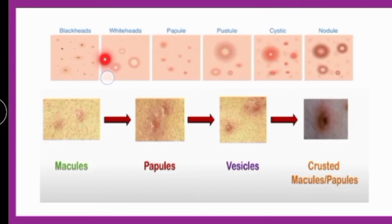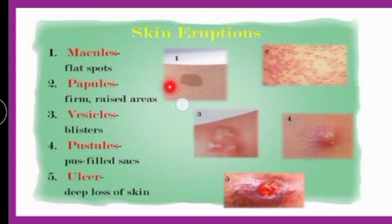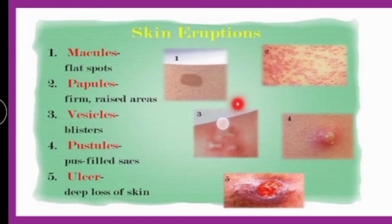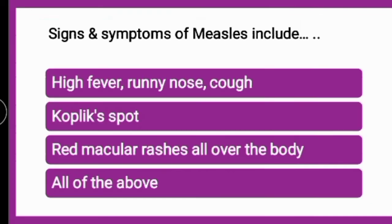Looking at the image showing types of lesions: macules are flat surface structures, papules are slightly raised areas, vesicles are fluid-filled, and pustules are pus-filled. So the progression is macule, papule, vesicle, pustule — macular lesions and pustular lesions — along with mild fever, itching, and then dried lesions like scabs. These are the symptoms of chickenpox.